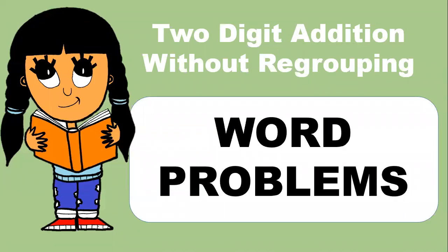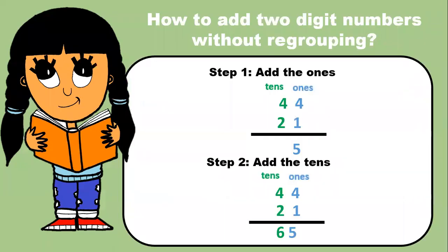Two-digit addition without regrouping word problems. How to add two-digit numbers without regrouping. Step one, add the ones. Four plus one equals five. Step two, add the tens. Four plus two equals six.